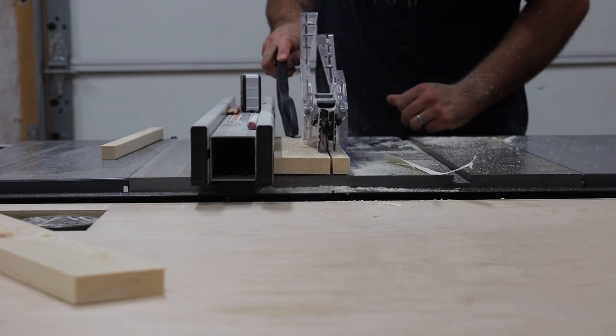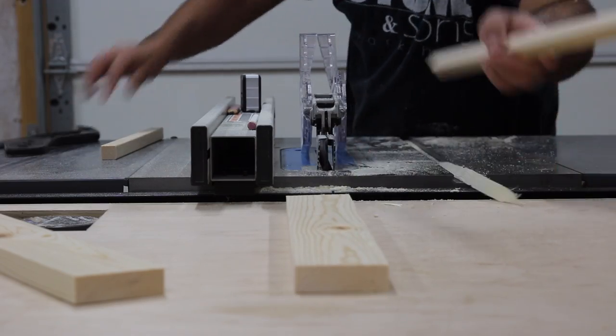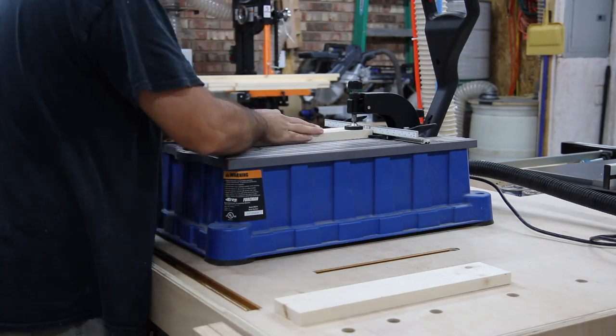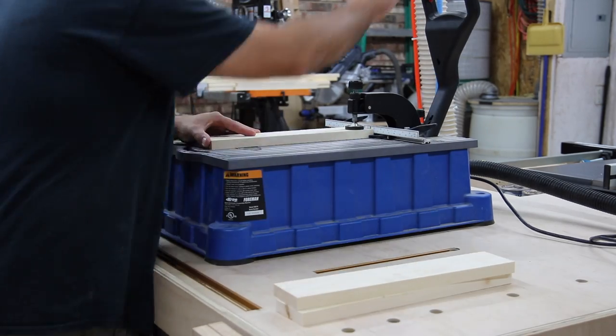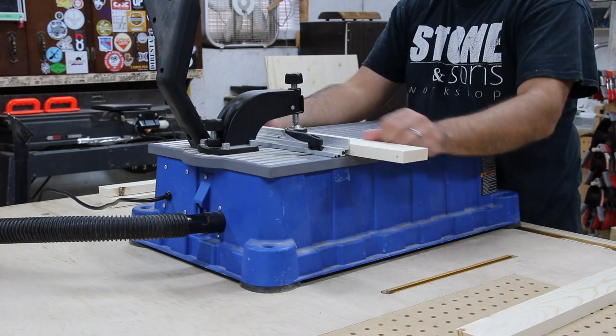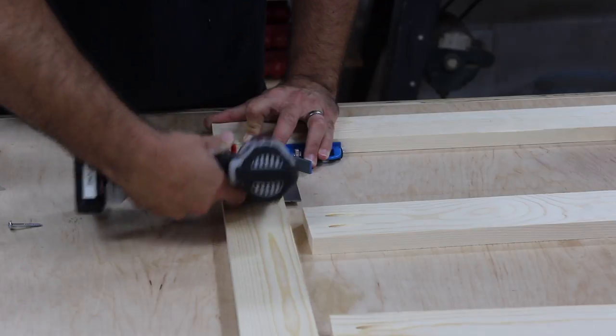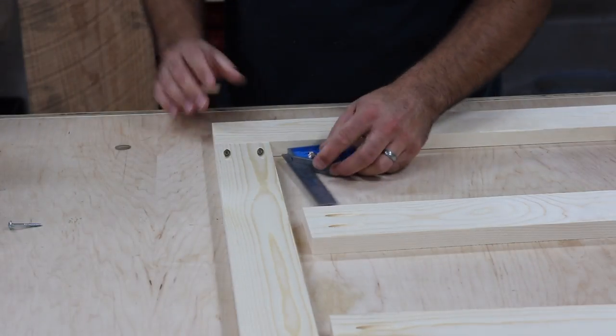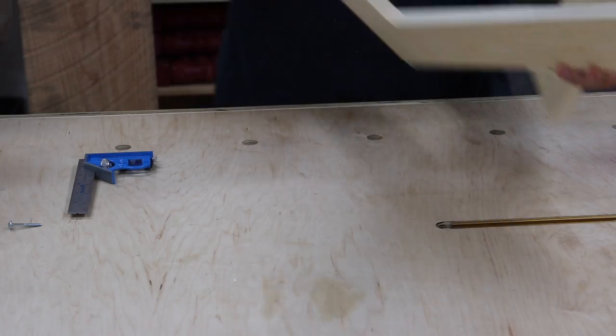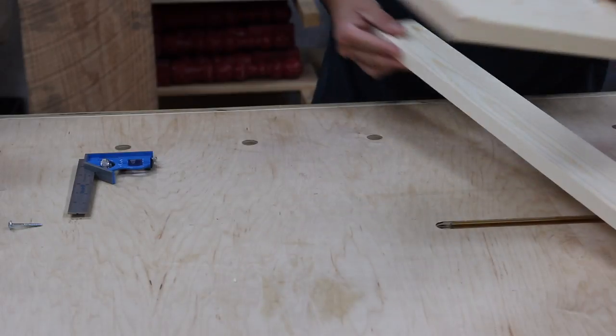At this point we've got everything to its final width and length. I chose to do this with pocket holes—it just makes things fast, quick, and easy. Here I'm putting everything together, using a square just to make sure my corners are nice and square at 90 degrees.